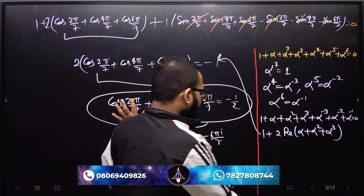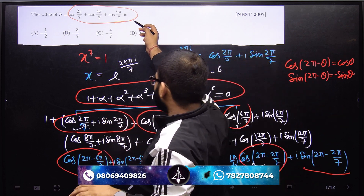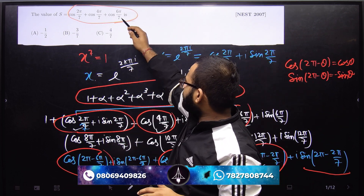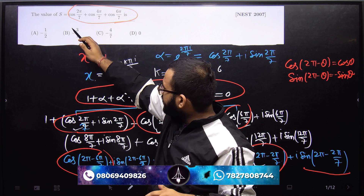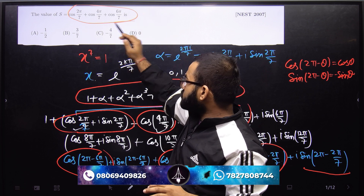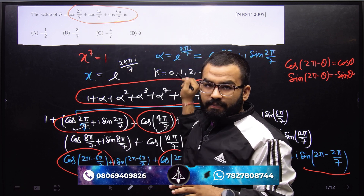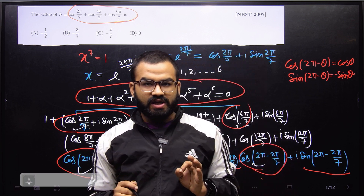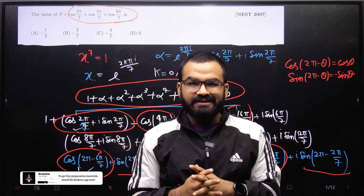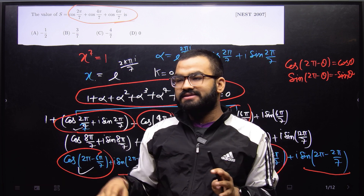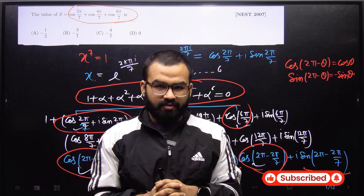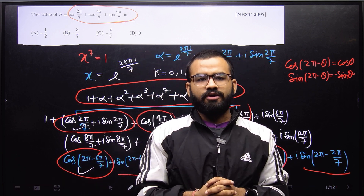This is a very fantastic question. You can also generalize it up to 2n+1 — for example if the denominator is 13, you can continue the cosine series up to 12π/13. This question came in NEST and no one would guess it is a root of unity problem rather than a trigonometric problem. Thank you very much.